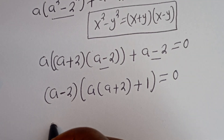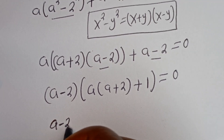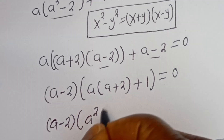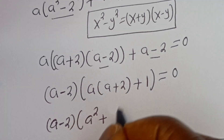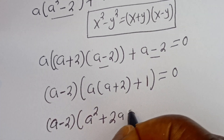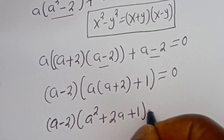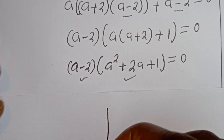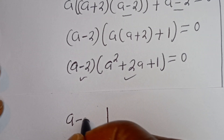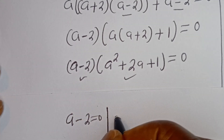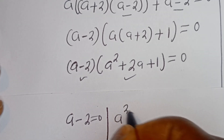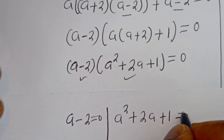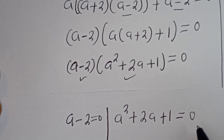Expanding: A squared plus 2A plus 1 is equal to 0. So there are 2 cases here. The first case is A minus 2 equal to 0. And the second case is A squared plus 2A plus 1 is equal to 0.